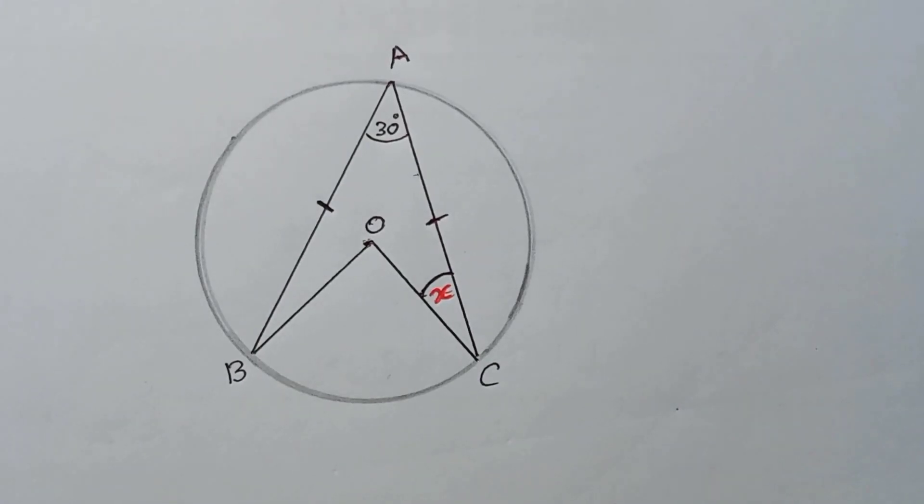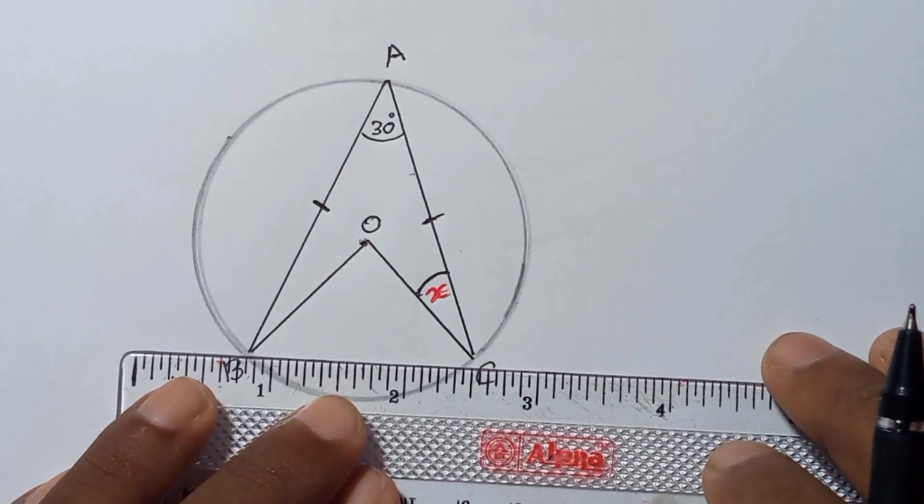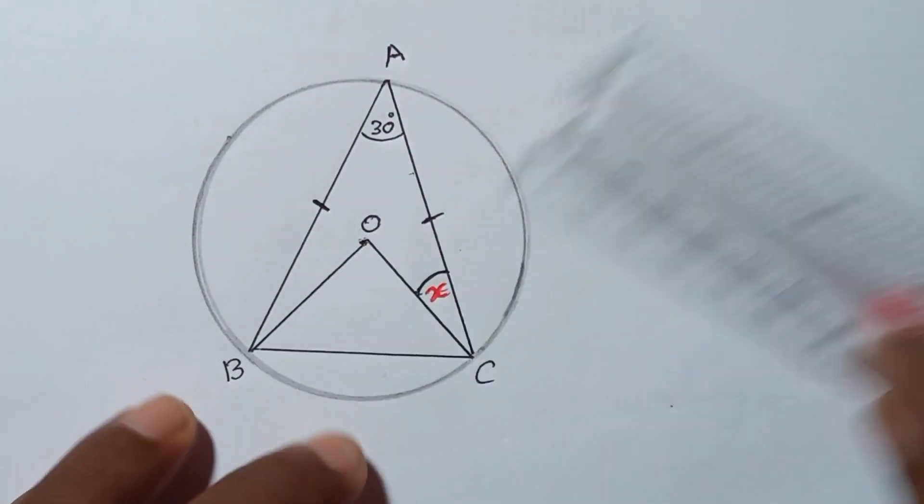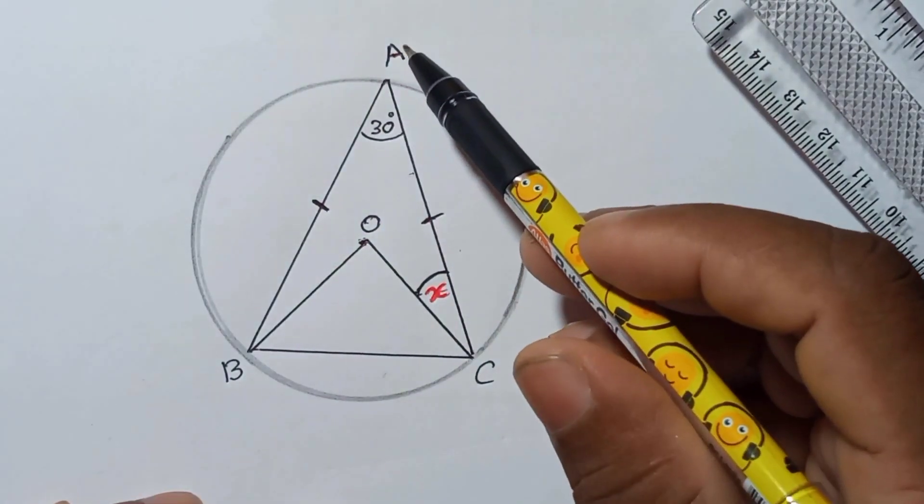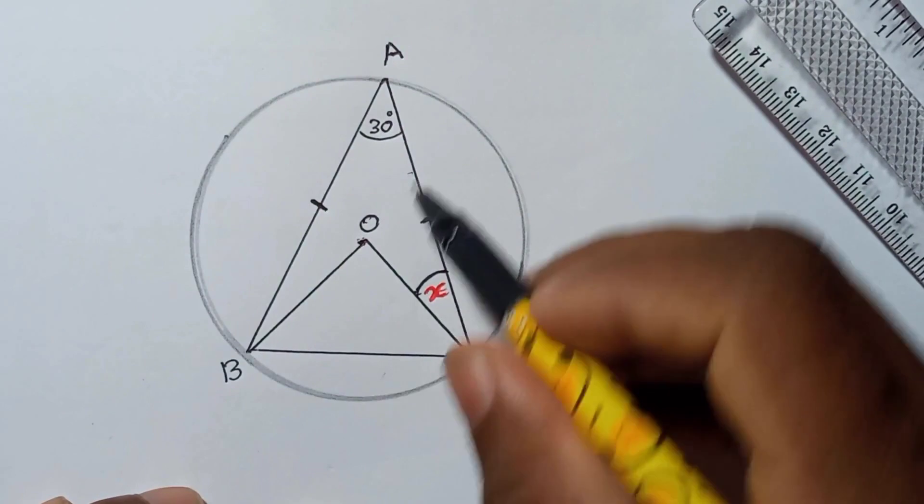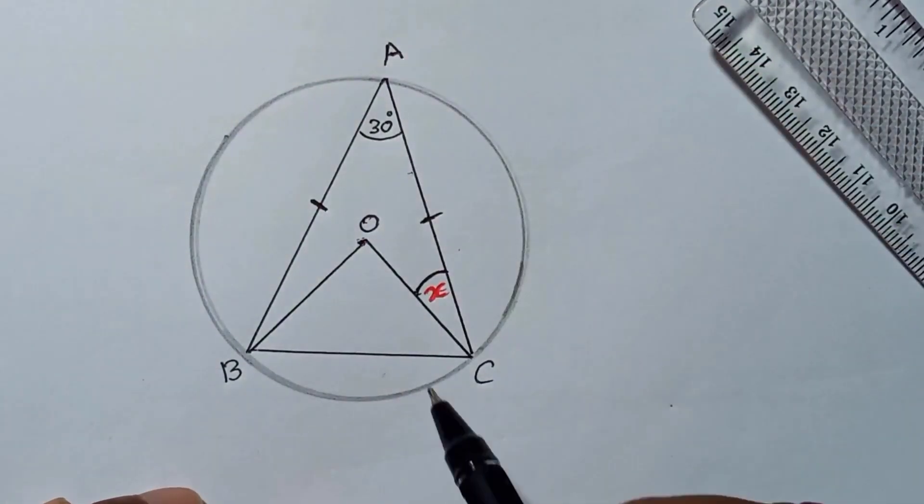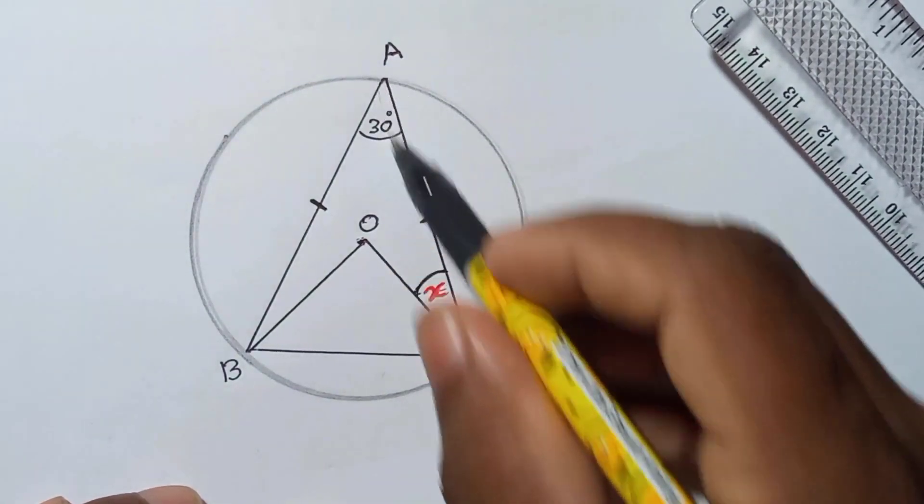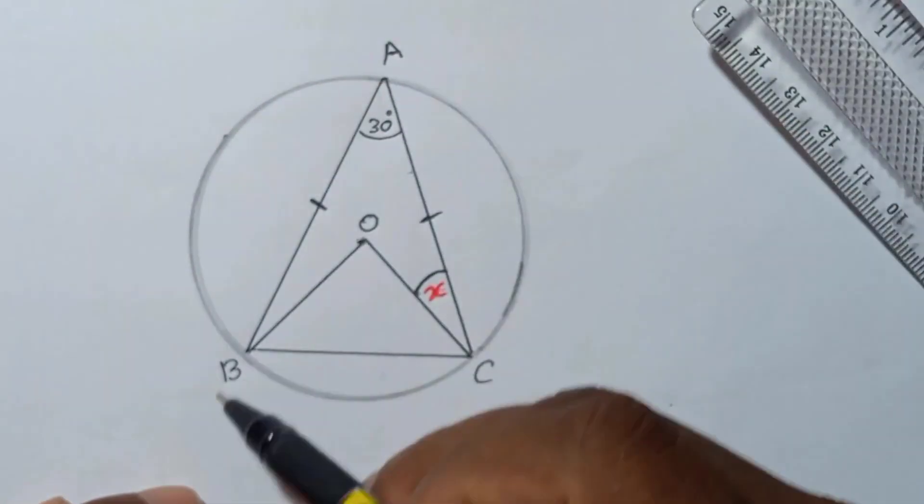Okay, here I will join B and C. Now you can see here, AB and AC are equal, so that's why this is an isosceles triangle. ABC is an isosceles triangle, so that means opposite angles of equal sides are equal.